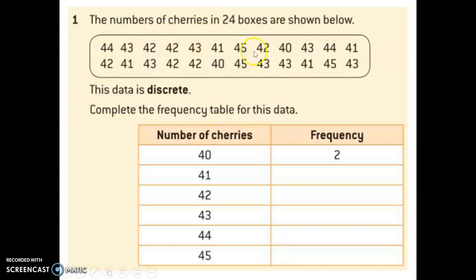Let's say we have this data about the number of cherries in 24 boxes. In box one, there were 44 cherries. In box two, there were 43 cherries, and so on. This data is said to be discrete. Here we are creating what's called a frequency table. Frequency tables are a very useful way to organize and present data. We have the number of cherries, and we're going to have a frequency column. Frequency is just a count. It means how many times does that piece of data appear in this data set. 40 appears twice, so we put 2 here. Go ahead and fill in the rest of this frequency table.